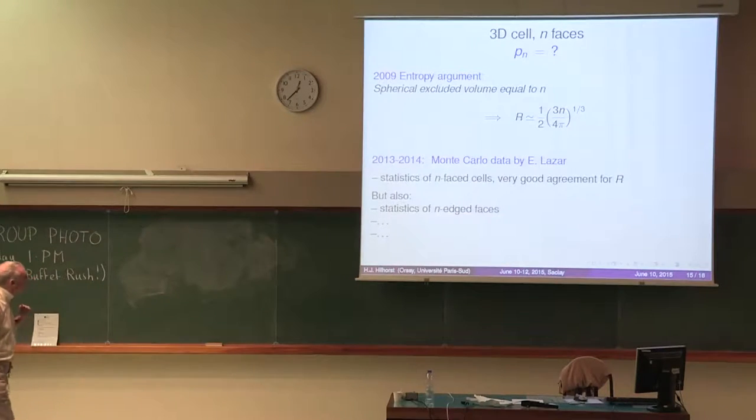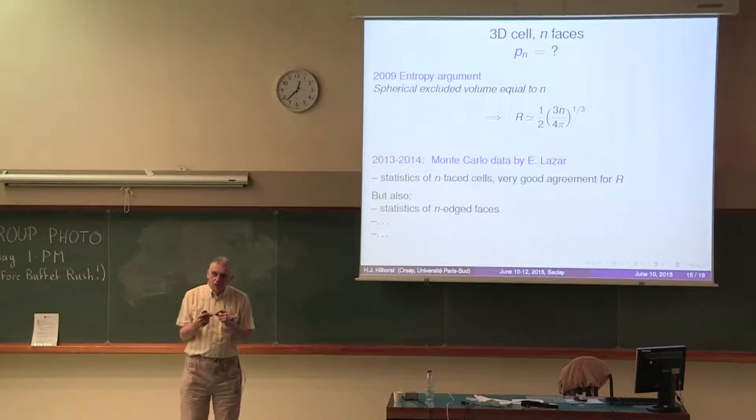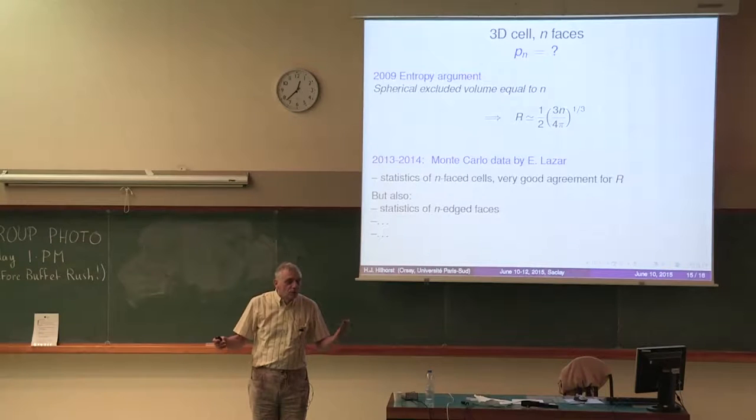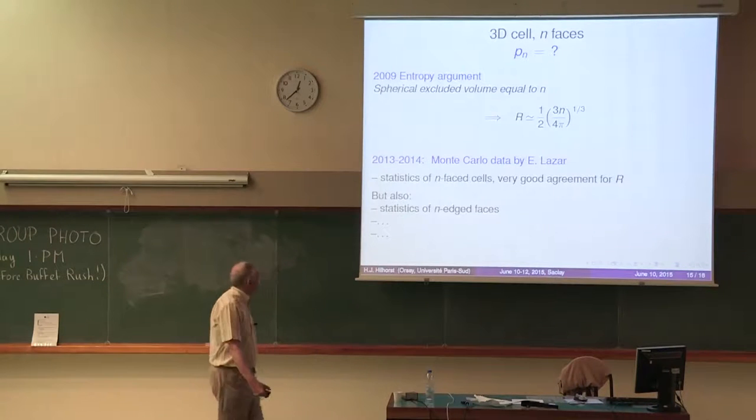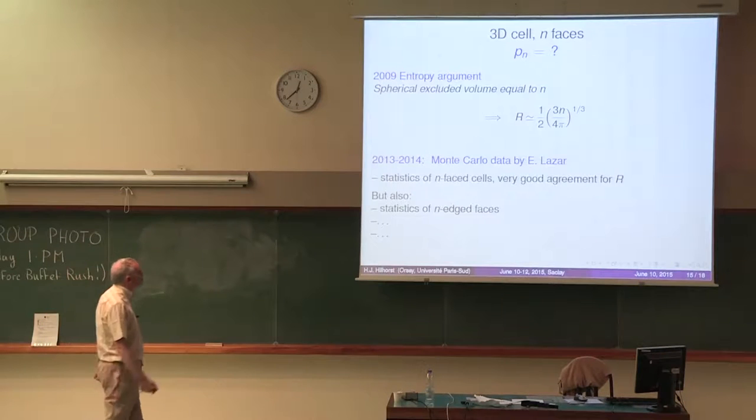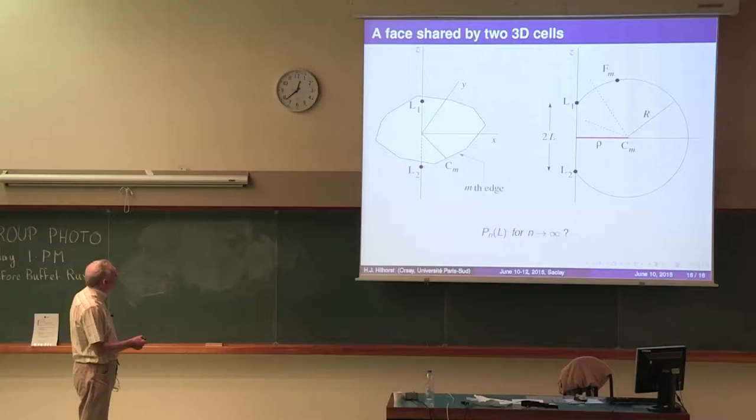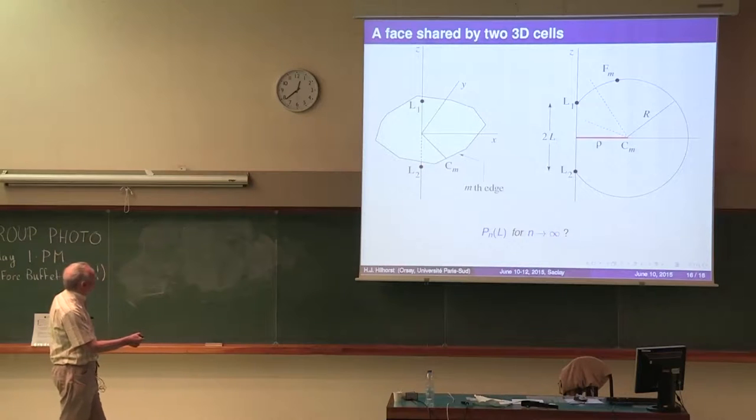However, his statistics also concerned another quantity. It concerned the statistics of the faces of the three-dimensional cells. You can select a face, and you can ask what is the probability that that face has n edges. That is a problem that looks much more like a two-dimensional problem, and I slowly began to realize that there are similarities there. Let us now look at a face between two three-dimensional Poisson Voronoi cells.